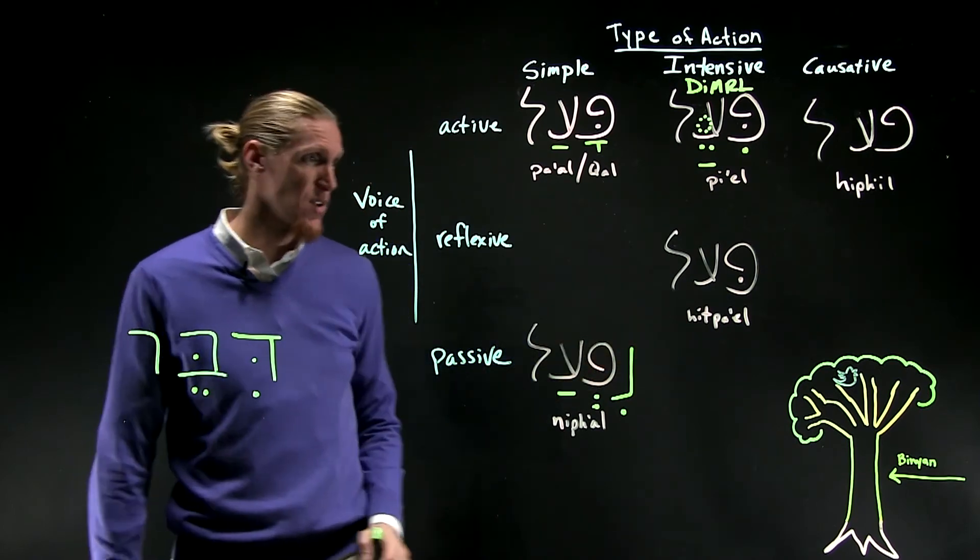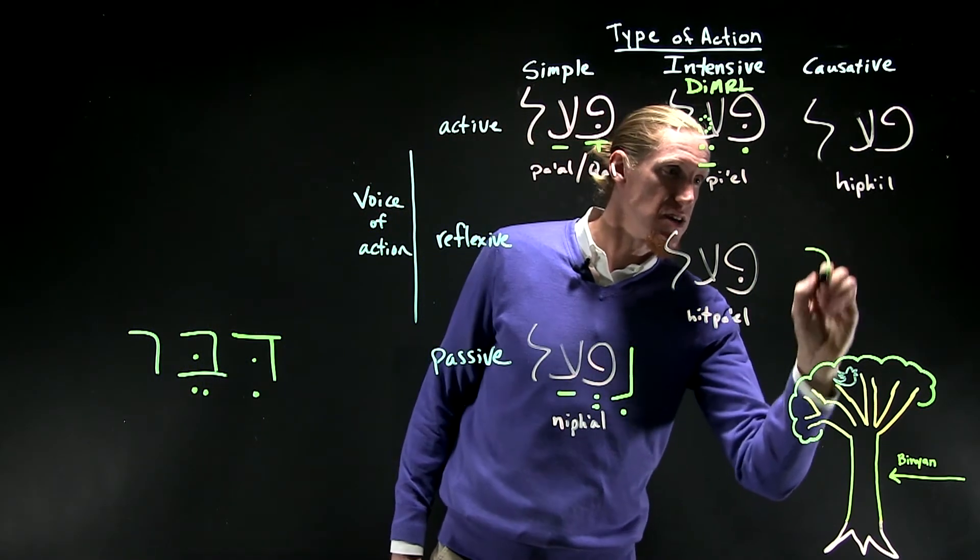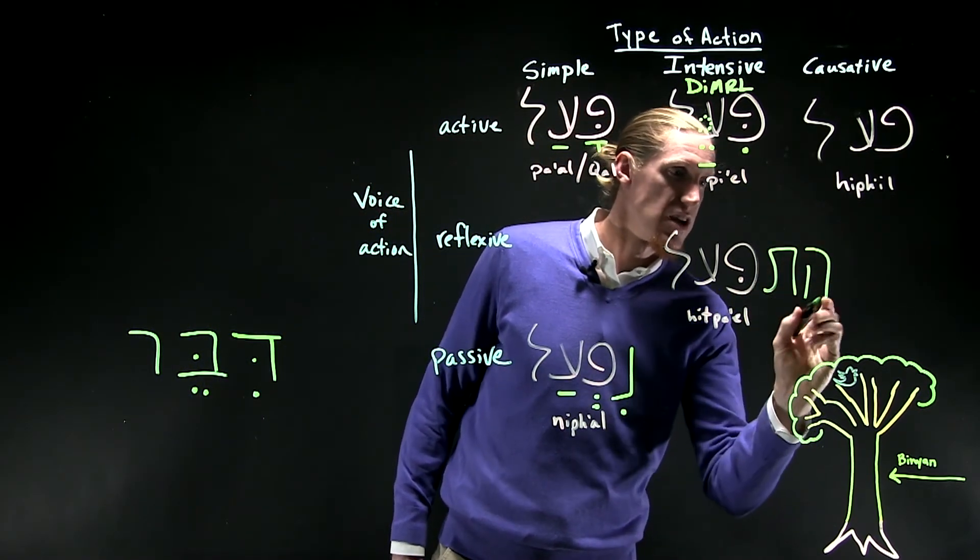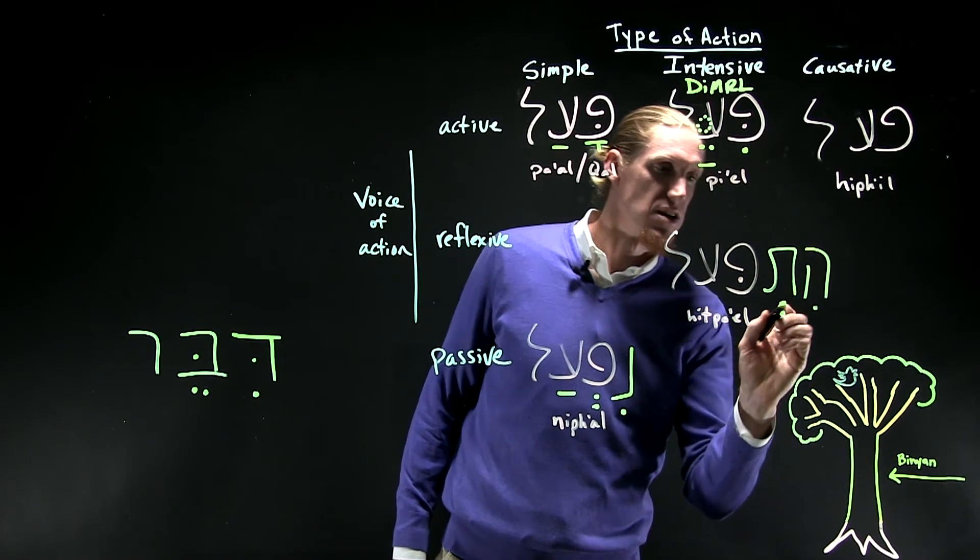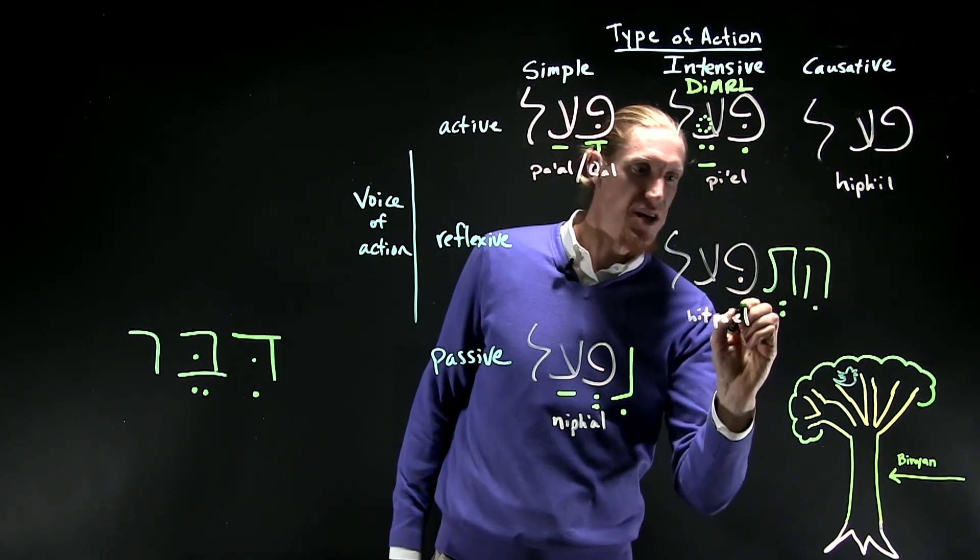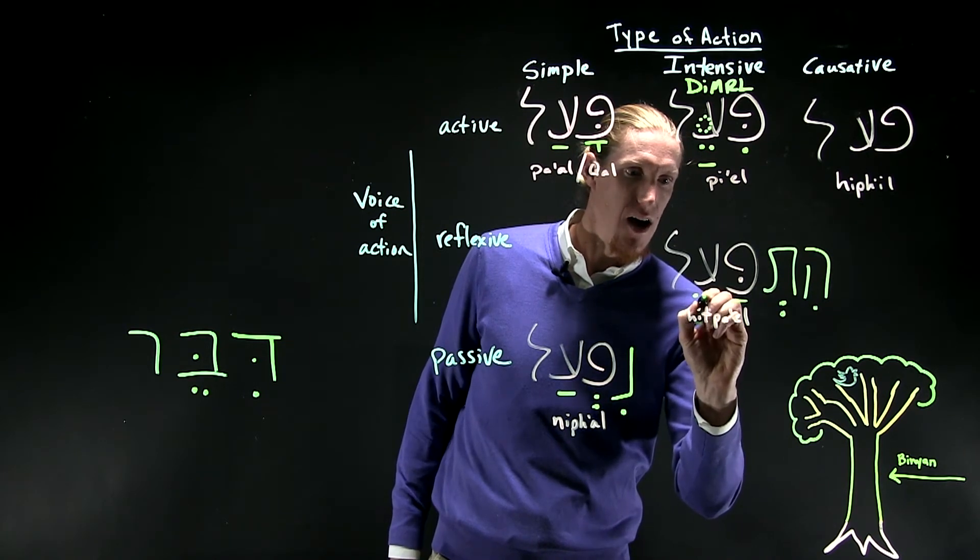So let's move on to the hitpa'el. Hitpa'el is the easiest stem sign to notice because it's got this het on the beginning. Het-a-ay.